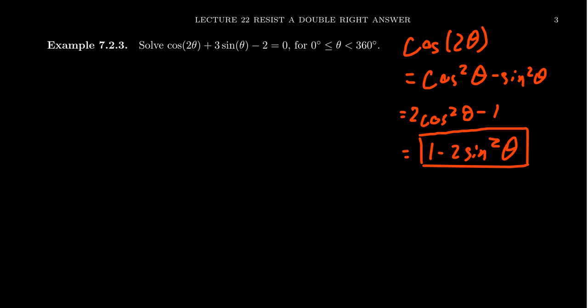In this case, we want a sine, because we already had a sine here. If instead this was a cosine of theta, we would choose this one instead. But that's not the reality. Since we have a sine theta, we're going to move forward with that.